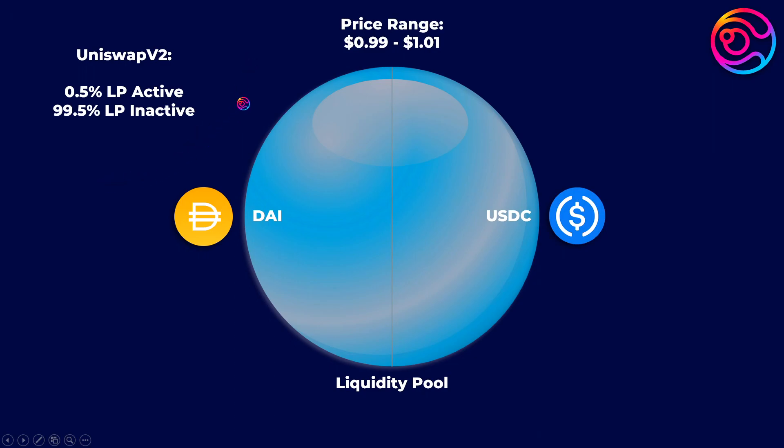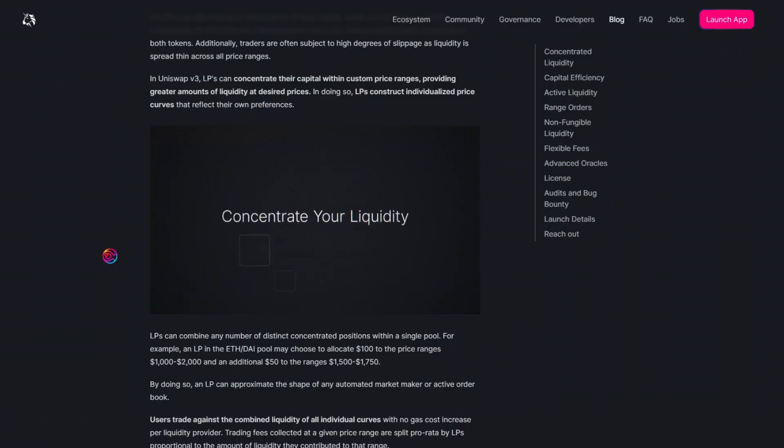In fact, only around 0.5% of the entire liquidity pool of DAI and USDC on Uniswap V2 is used, leaving 99.5% on the sidelines basically doing nothing. That is why the concept and practice of concentrated liquidity was developed.